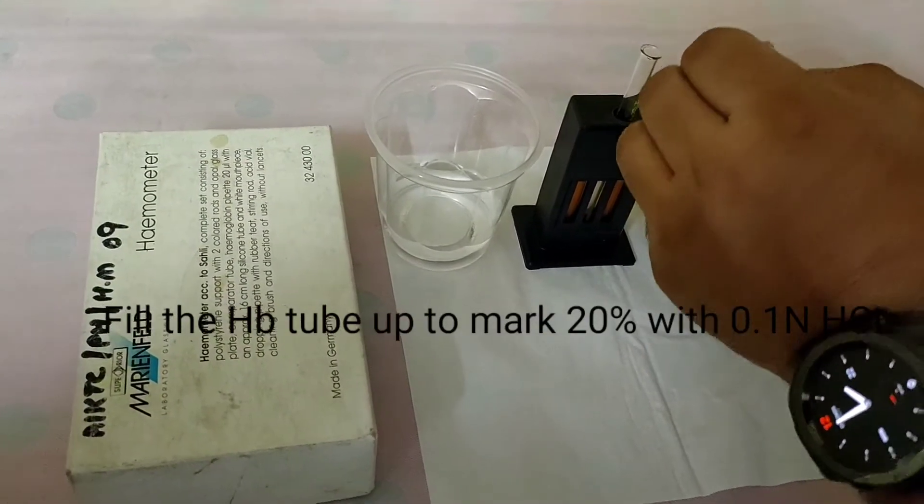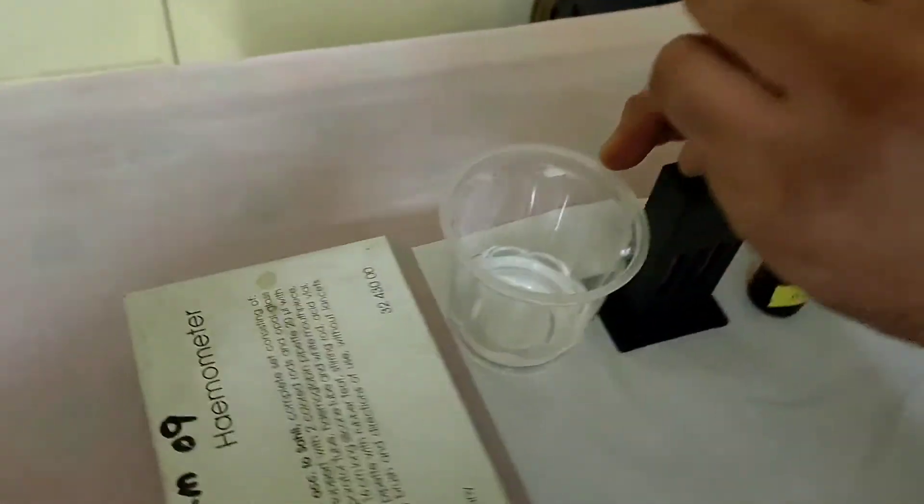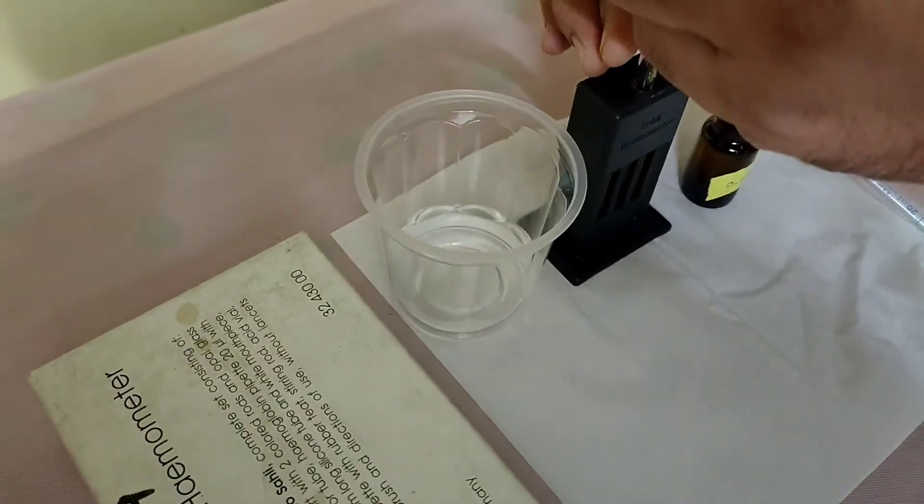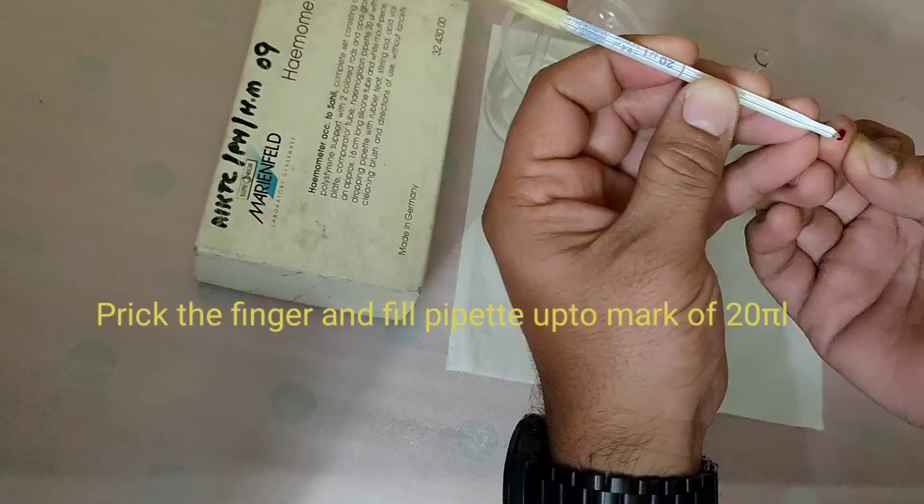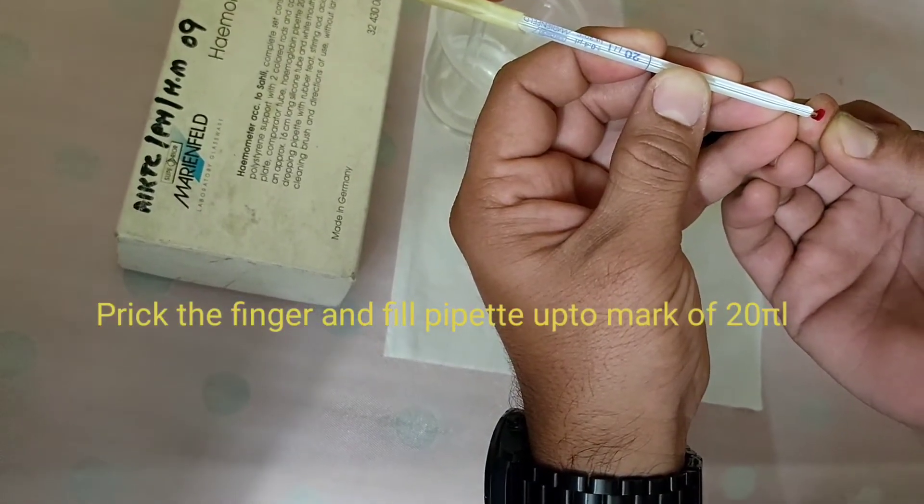After filling the HB tube with 0.1 normal HCL, then prick the finger and fill the pipette up to the mark 20 microliter.